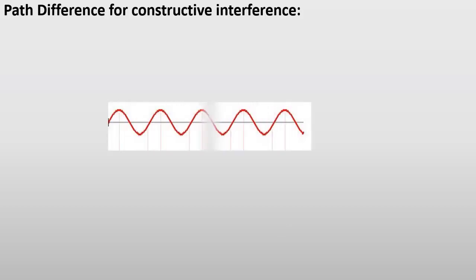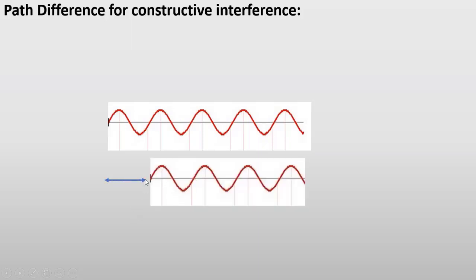Path difference for constructive interference. Yahan pe path difference ka concept hum dekhenge. Suppose hamare paas ye ek wave hai aur ek doosri wave hum yahaan dekhte hain. Aap dekhein ke pehli wave ne zyada distance cover kiya hai aur doosri wave ne kam distance cover kiya hai. In dono ke darmiyan jo farq hai wo ek complete wavelength ke jitna hai — yani first wave ne ek complete wavelength jitna distance zyada cover kiya hai. Ab agar ye dono waves interfere karein, to constructive interference dekhne mein aayegi. In dono ke distance covered mein jo farq hai usko hum path difference kehte hain, aur is case mein path difference ek complete wavelength ke jitna hai.